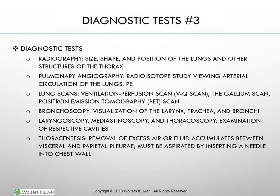Bronchoscopy is used to diagnose, treat, or evaluate lung disease; obtain a biopsy of a lesion or tumor; obtain a sputum specimen; perform aggressive pulmonary cleansing; or remove a foreign body. It allows direct visualization of the larynx, trachea, and bronchi. Fiber optic bronchoscopy uses a flexible bronchoscope for more thorough visualization of smaller peripheral airways. The physician introduces the bronchoscope through the nose, mouth, or through a tracheostomy. Rigid bronchoscopy uses a hollow metal tube for removing foreign bodies, diseased tissue, or visualizing sources of massive bleeding.